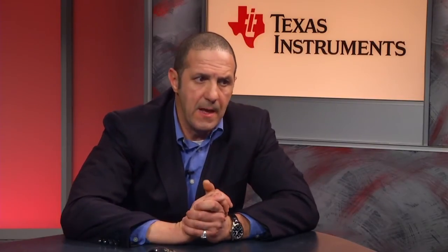We select the REF5045, which has a quiescent current of about 1 milliamp. That's good enough because it doesn't significantly degrade the power budget of the entire system, yet it gives the performance we need. It also provides stability in terms of drift and accuracy — specifically a drift of 3 ppm per degree Celsius and an output accuracy of 4.5 volts at 0.05%.